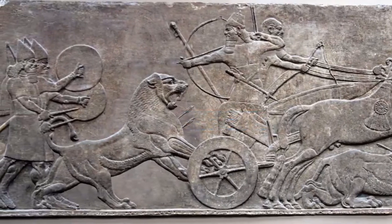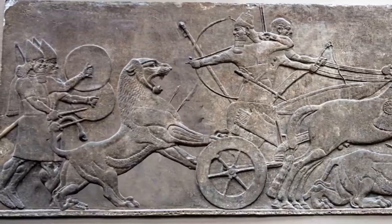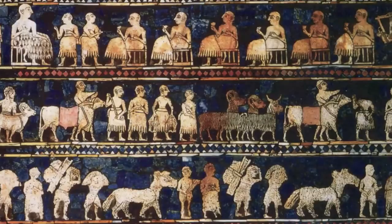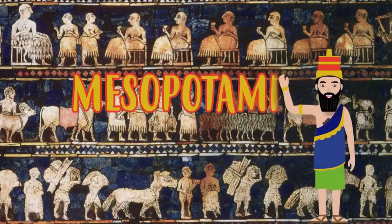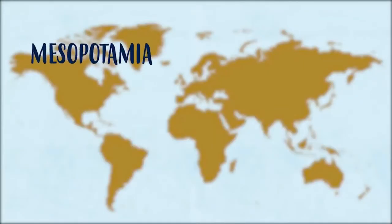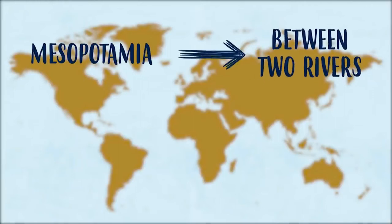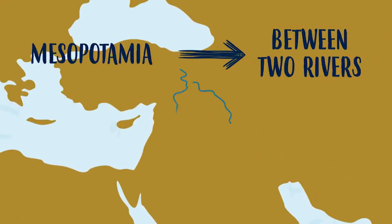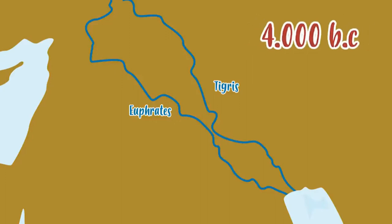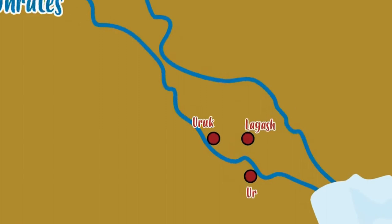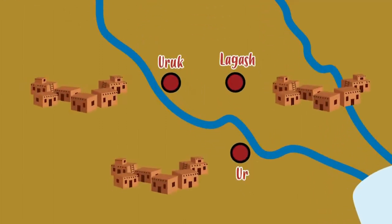[Embedded video - Happy Learning TV] Hello friends, welcome to a new Happy Learning video. Today we're going to learn about the first and most important of human civilizations — Mesopotamia. The word Mesopotamia means 'between two rivers' in Greek, so this civilization was named because it's situated between the Tigris and Euphrates rivers. Within these fertile lands, the first ever city-states were born 4,000 years before Christ. The most important cities were Ur, Uruk, and Lagash. These city-states were independent from each other.